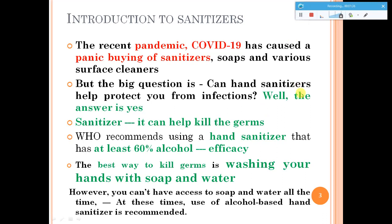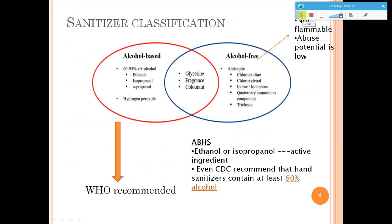The best way to kill germs is washing your hands with soap and water, but we all know that you will not always have access to soap and water. At that stage, you can think of using a sanitizer. Among sanitizers, alcohol-based sanitizers are recommended.